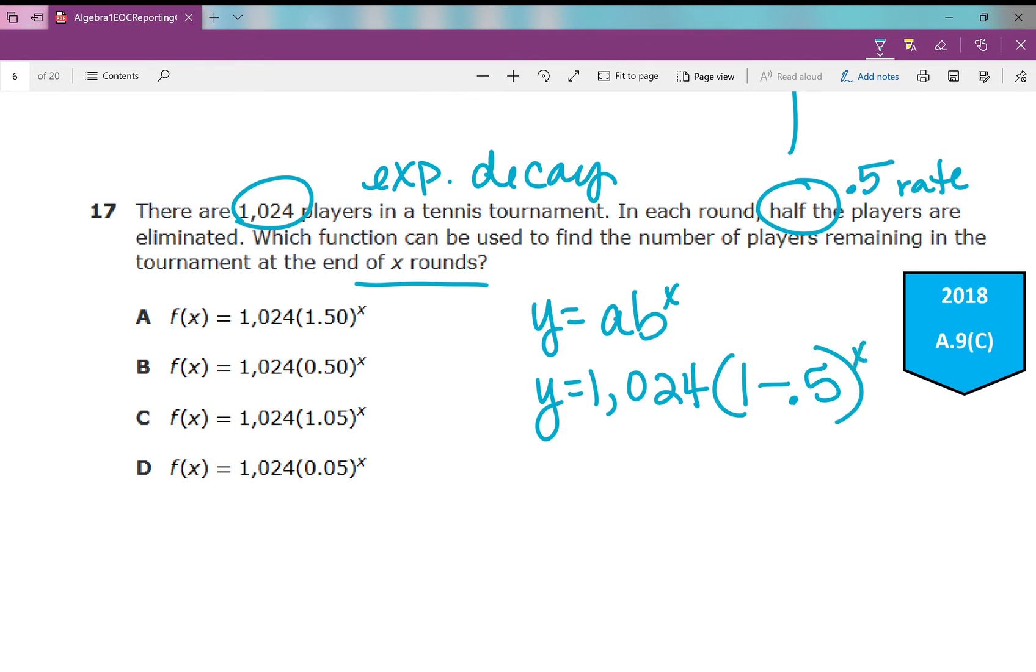Which looks like this. This is exponential decay. I take one and I subtract the rate as a decimal. And then I'm going to simplify it: 1,024 times 0.5 to the power of x. Which one of these answer choices shows that? B.